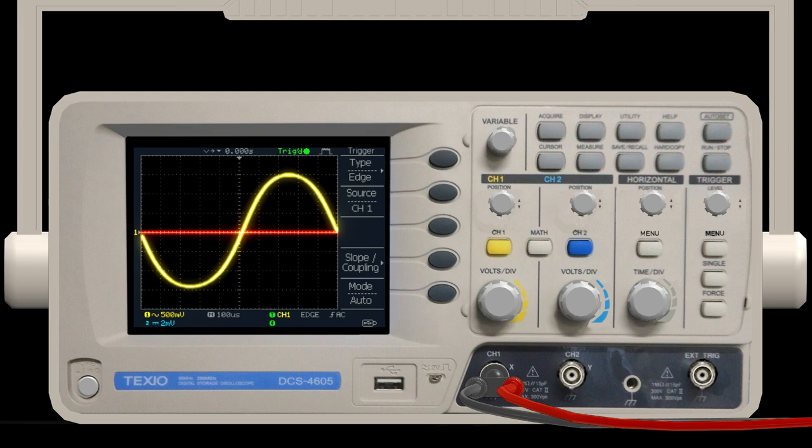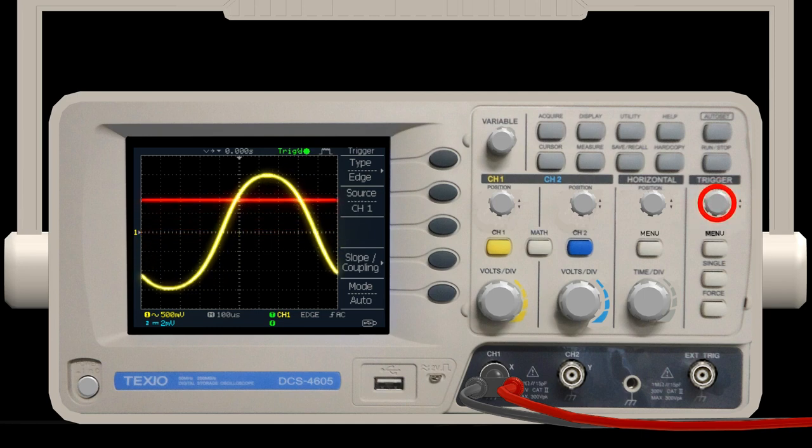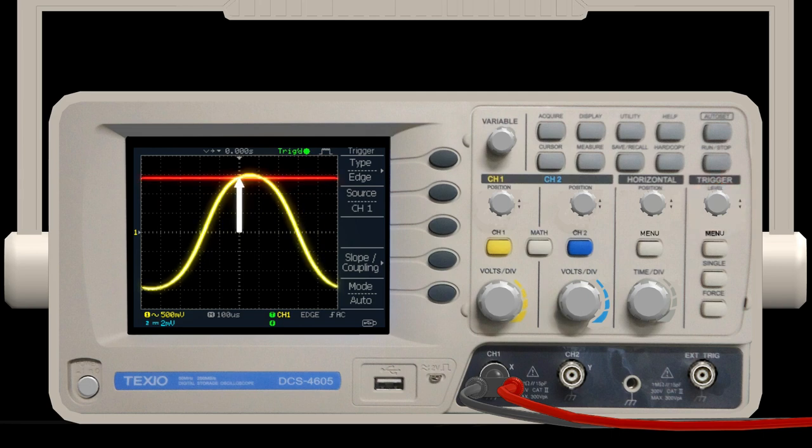When the signal voltage crosses the trigger level, the trigger is applied. The area in the middle of the screen shows the voltage at the time the trigger is applied. Turn the trigger level knob to the right to increase the trigger level. Can you see that the voltage at the time of triggering is moving to the positive side?